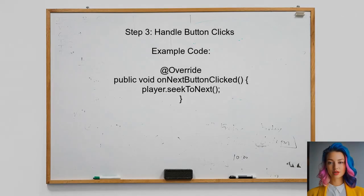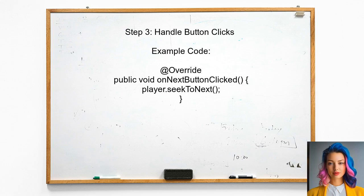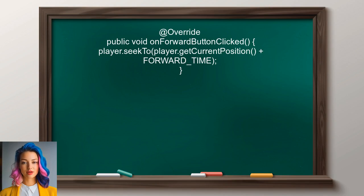Now, handle the button clicks within the listener. For example, when the next button is clicked, you can call the seekToNext method to play the next video in the playlist. Additionally, you can implement similar methods for the previous, rewind, and forward buttons. Each method should control the playback accordingly.